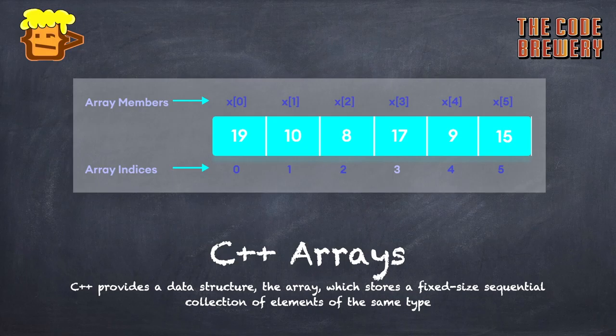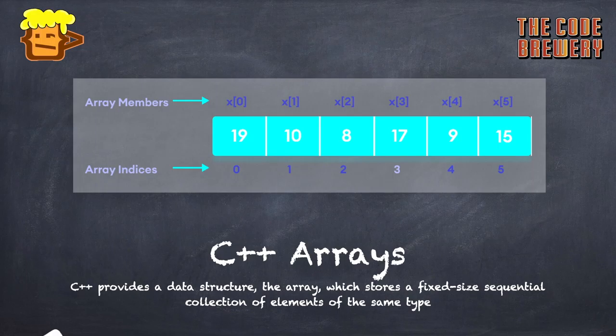C++ provides a data structure called the array, which stores a fixed-size sequential collection of elements of the same type. An array is used to store a collection of data, but it is often more useful to think of an array as a collection of variables of the same type.